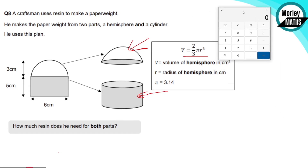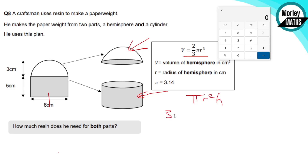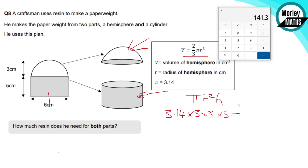Working out the cylinder first: we're given a diameter so we halve it to get the radius of 3. Using pi r squared h: 3.14 times 3 times 3 times 5 gives us a volume of 141.3 centimeters cubed for the cylinder.